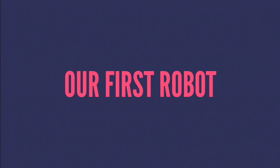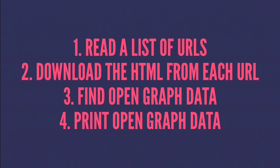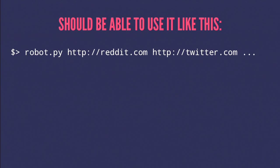Linda and I sat down that afternoon right after lunch and started building our very first robot. We wanted to keep it really simple - four things: read a list of URLs, download the HTML from each, find any Open Graph data that might be in there, and print that back out. This is how we wanted to be able to use it - just pass in a bunch of URLs. Those social media company names look familiar.